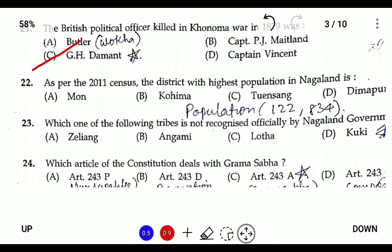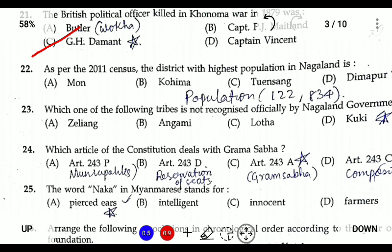Question twenty-two: as per the 2011 census, the district with the highest population in Nagaland is Dimapur, with a population of 378,434, which is the highest in the state.